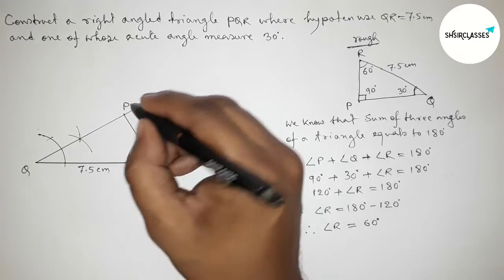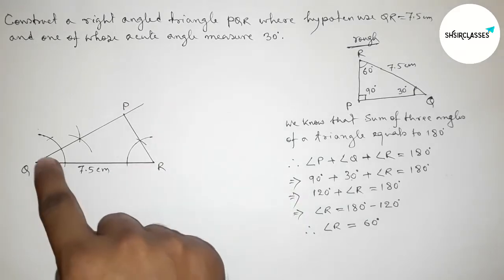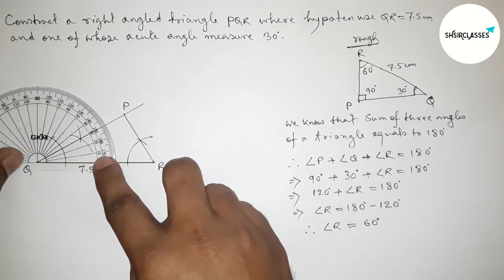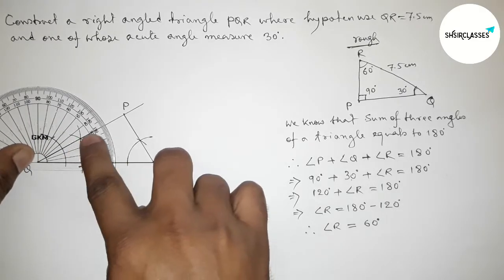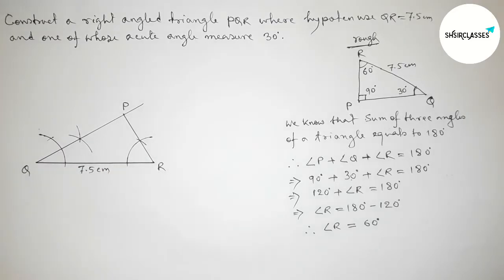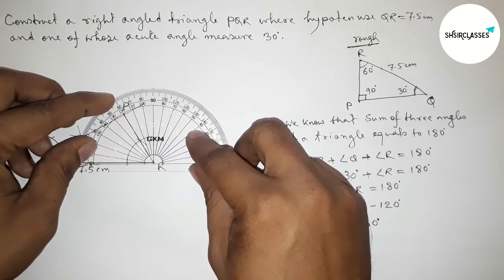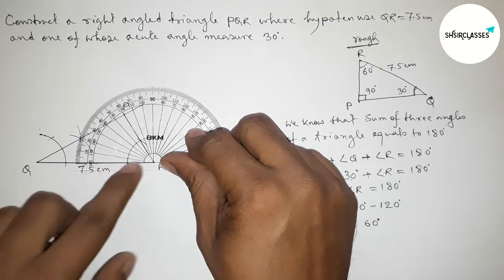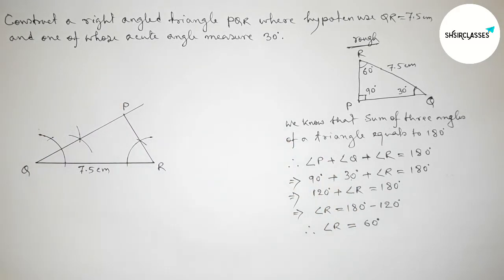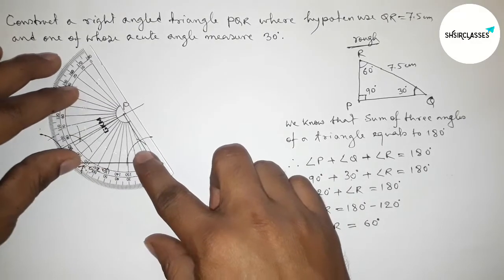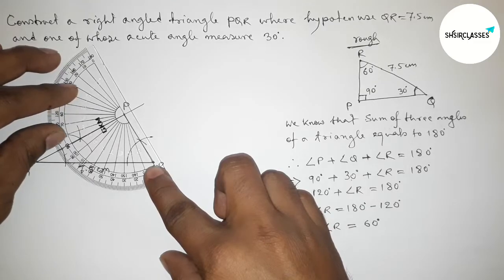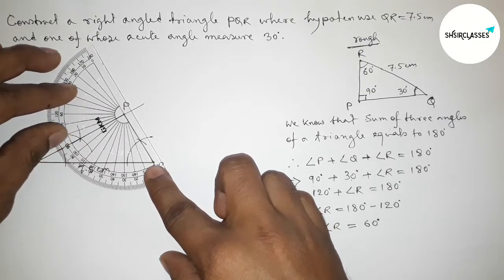Taking point P where the lines meet. Now checking all the angles with the help of a protractor. Checking angle Q — this is perfectly 30 degrees. Checking angle R — this is also perfectly 60 degrees. Checking angle P to verify it is 90 degrees — this is also perfectly 90 degrees.